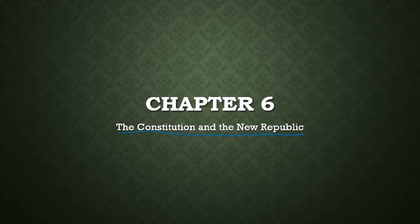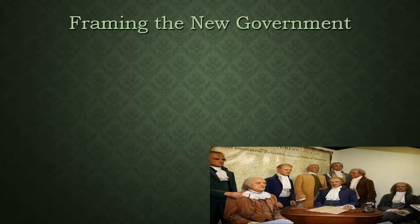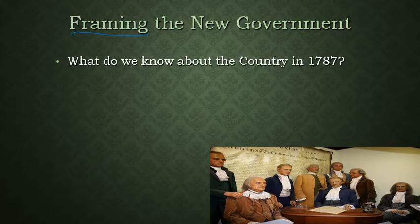So here we are in 1787, getting ready to establish this new system, because it's clear that the Articles of Confederation just don't work. It's always important to be aware of the timeline — we've just had Shays' Rebellion, and it's become apparent that the Articles of Confederation are not going to work at handling certain crises. We need a stronger national executive to manage some of the problems that exist in the country.